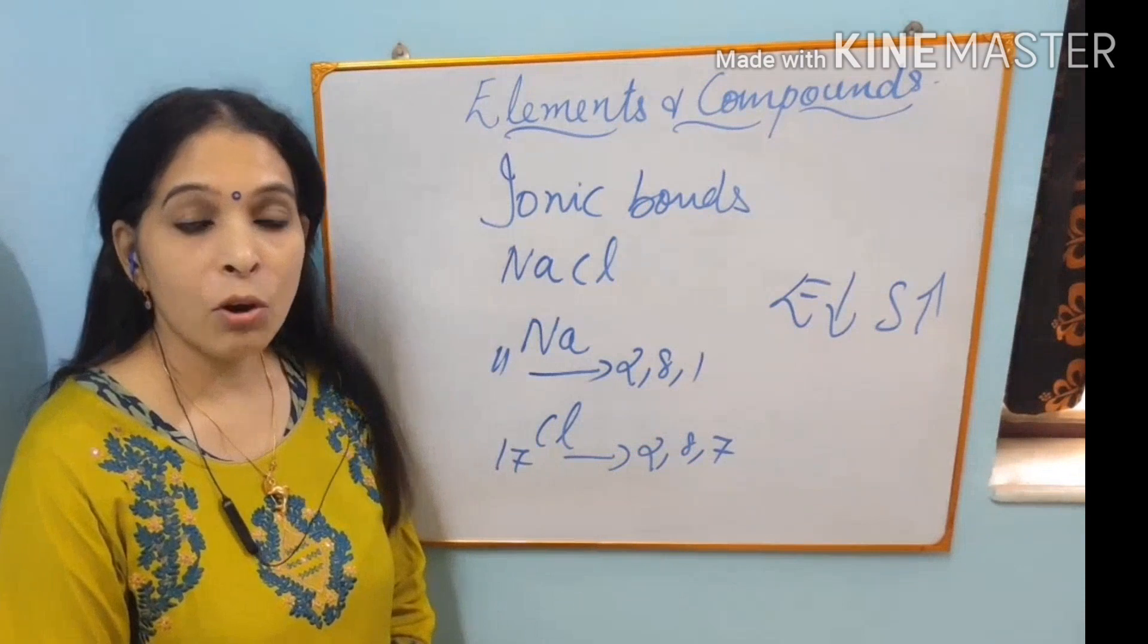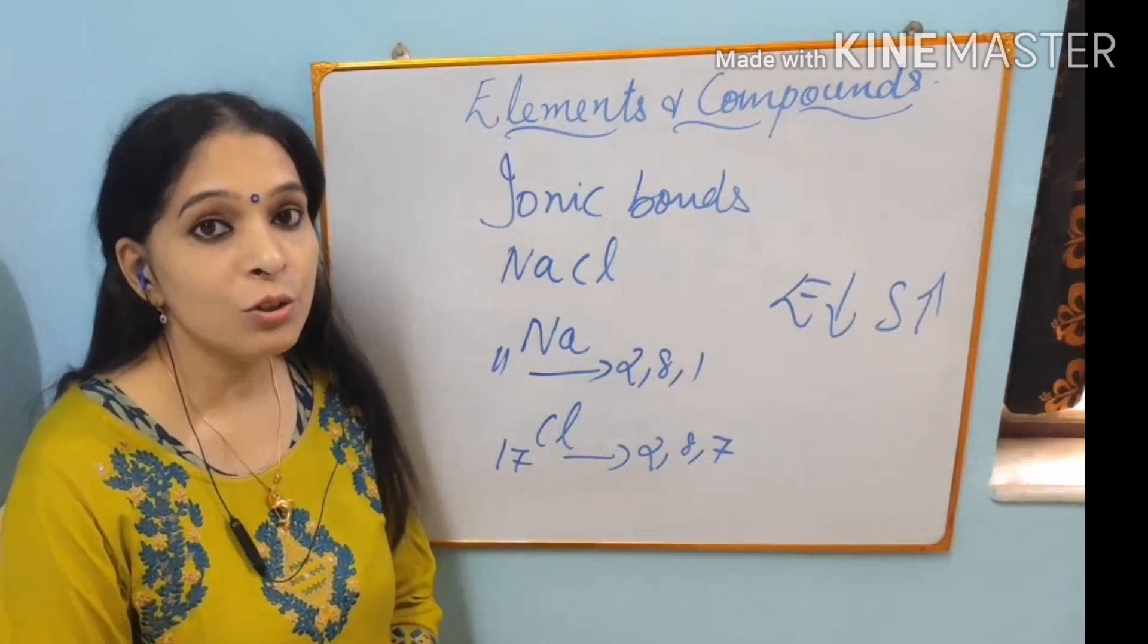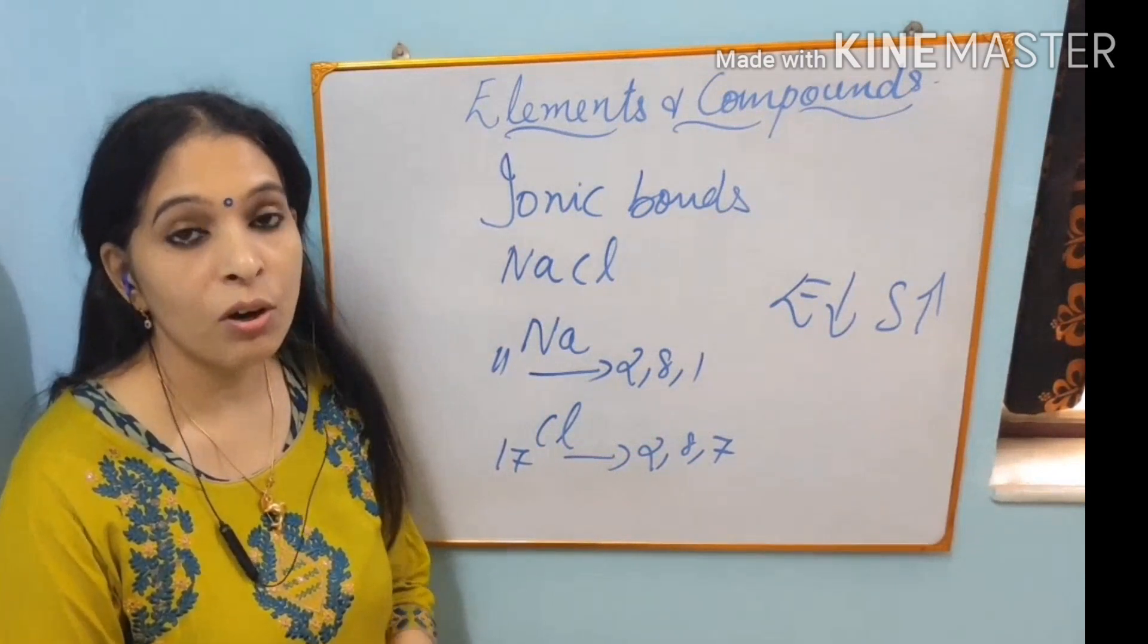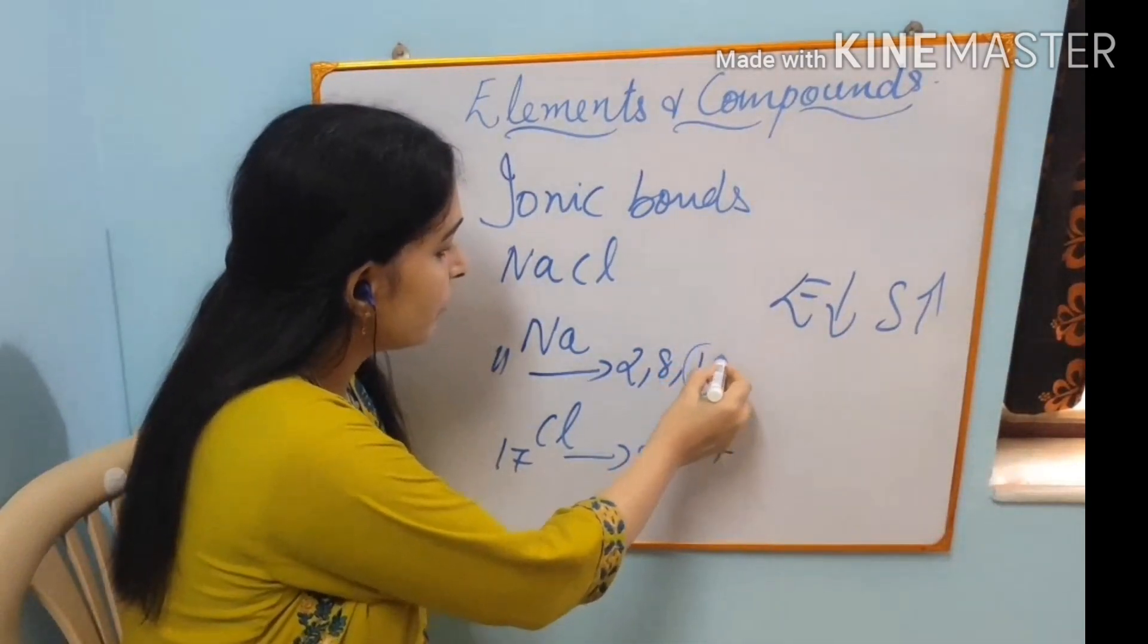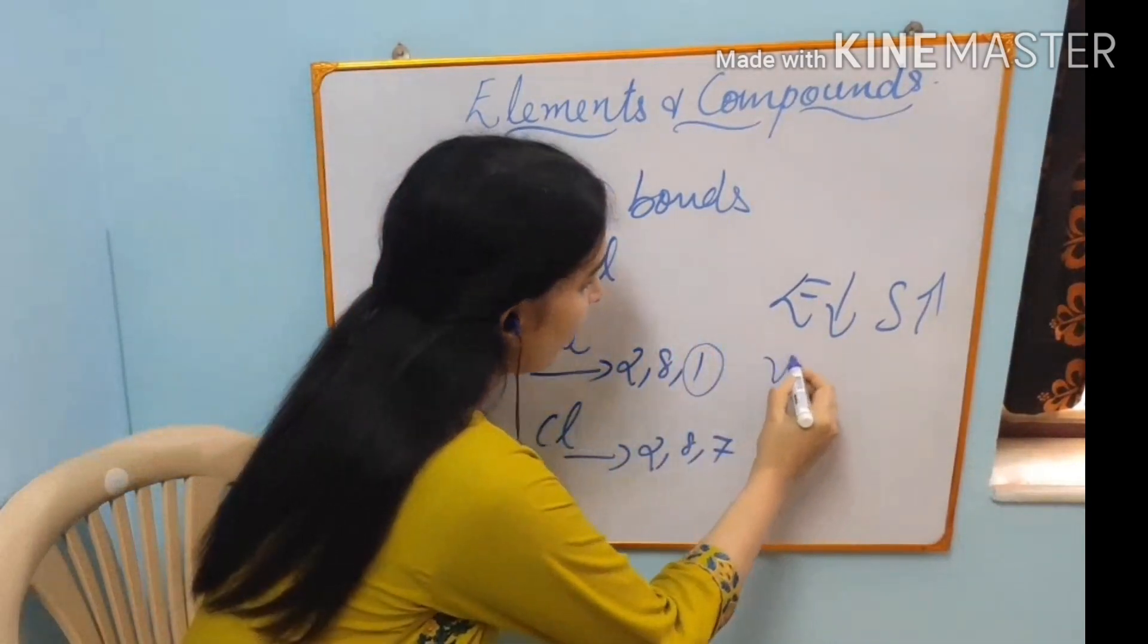Another point is that all the elements want 8 electrons in its valence shell or outermost shell. This is the outermost shell of sodium. It is also known as valence shell.